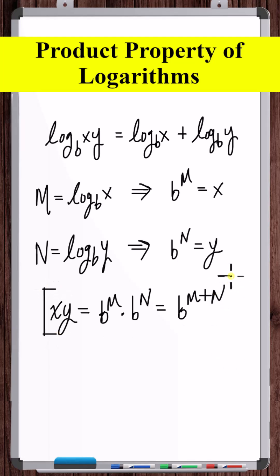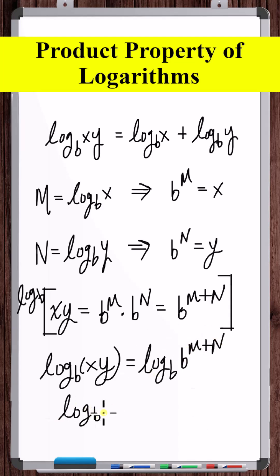But now if we take the log base b of this entire equation, we get log base b of x times y is equal to log base b of b to the m plus n. But we know this is just equal to m plus n.